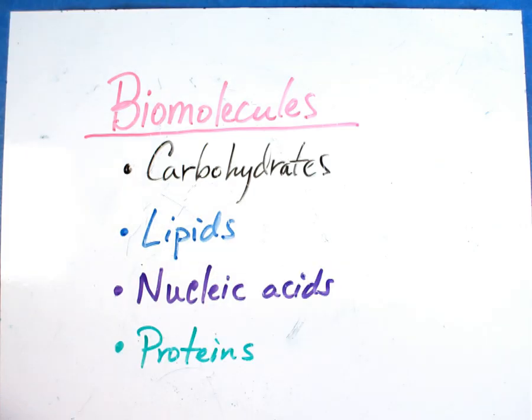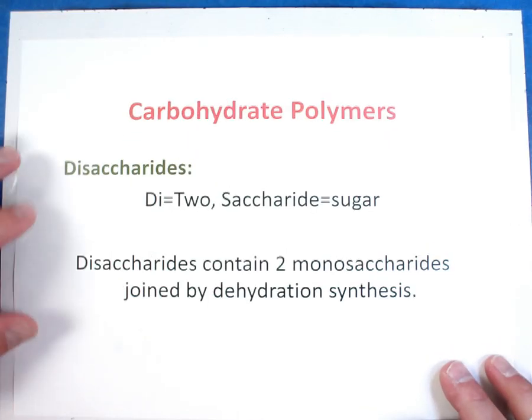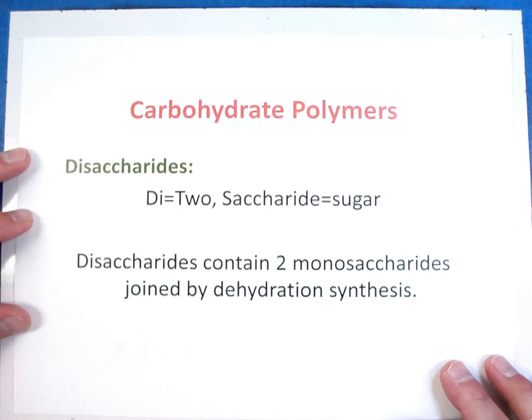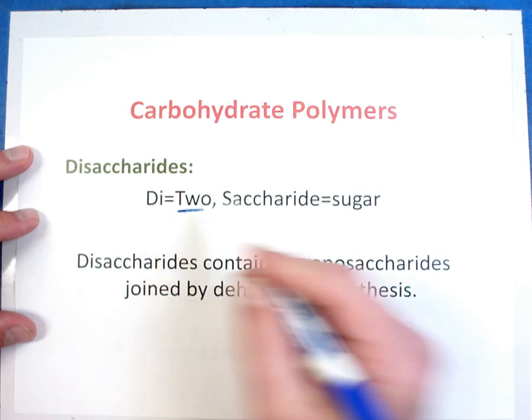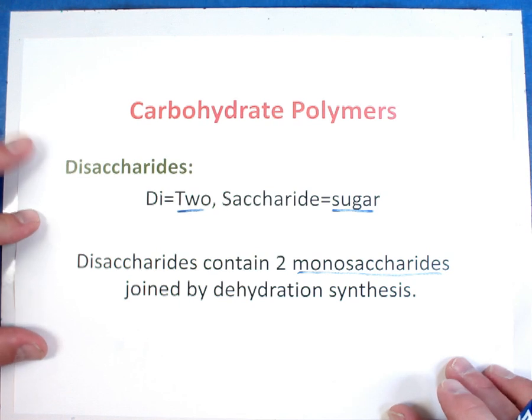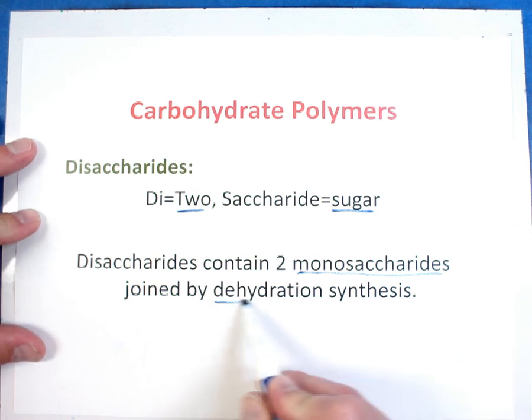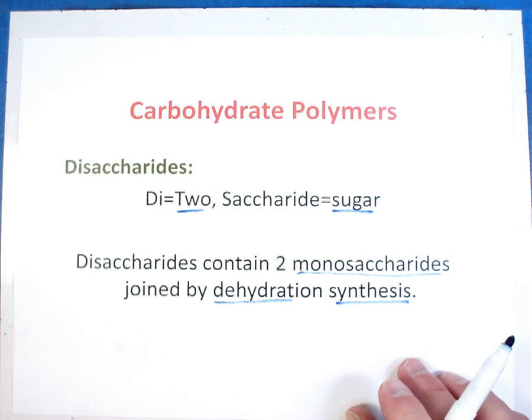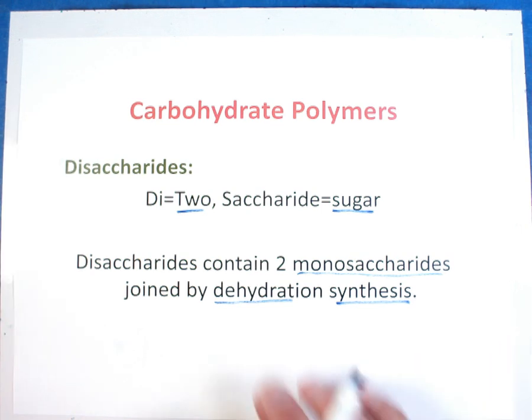There are also what are called disaccharides. Di means two. And again, saccharide means sugar. So it's two sugars. So you're going to take two monosaccharides and you're going to join them together. You're going to link them together and you're going to end up getting a disaccharide.